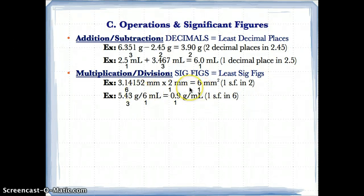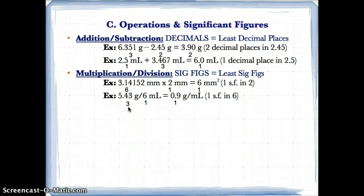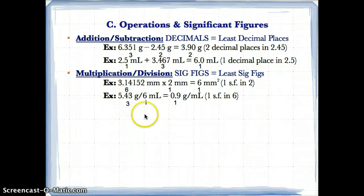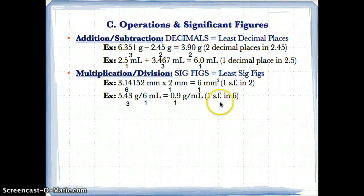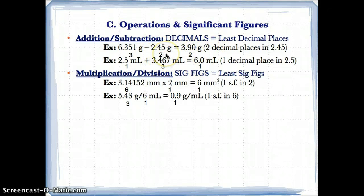The moral of the story: for addition and subtraction, find the quantity with the least number of decimal places — that tells you how many decimal places should be in the answer. For multiplication and division, find the quantity with the least number of significant figures — that's how many should be in your answer.